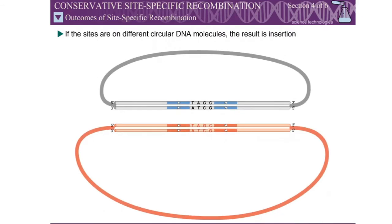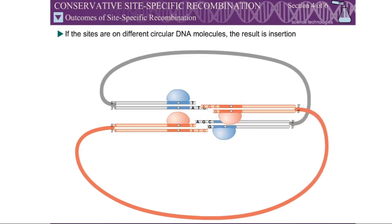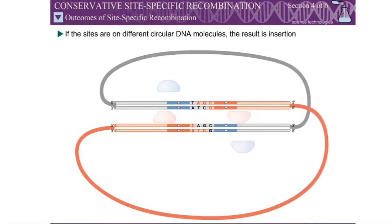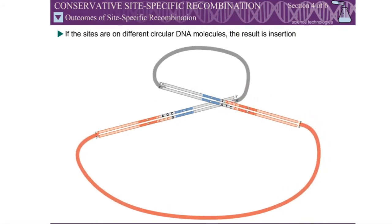If the recombination sites are on different circular DNA molecules, the result of site-specific recombination is insertion of one of the molecules into the other.